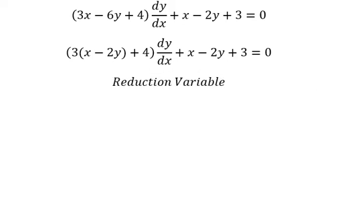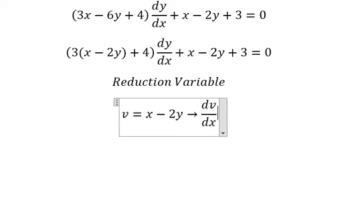So I will put v equal to x minus 2y. Later we need to do first derivative for both sides. We have dv over dx.